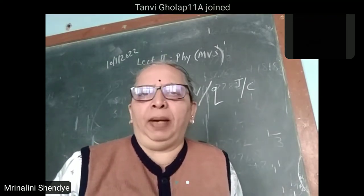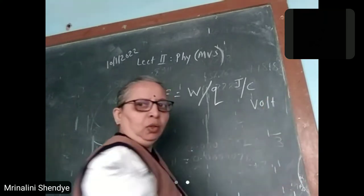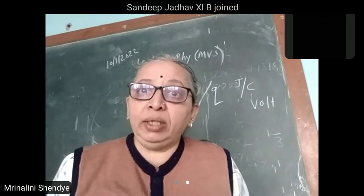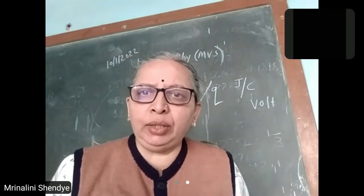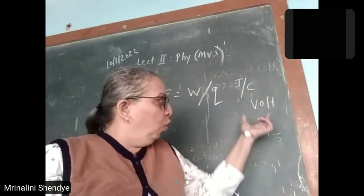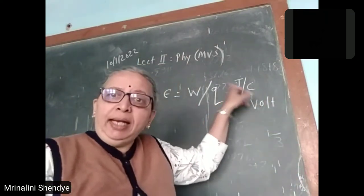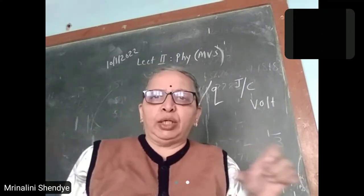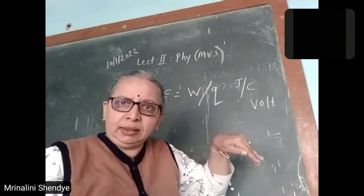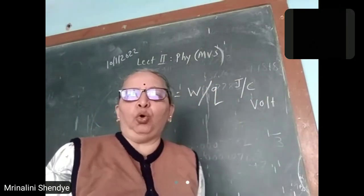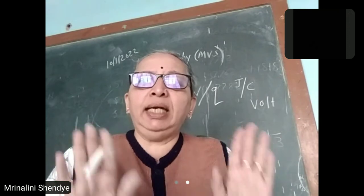Generally, for practical purposes, it is also expressed in terms of Volts. You should write Joules per Coulomb. By definition, it is energy supplied by the source for unit charge to circulate once round the complete circuit. If W amount of work is done by the source to circulate Q amount of charge once round the closed complete circuit, then EMF of a given cell is W divided by Q. This is its theoretical definition.